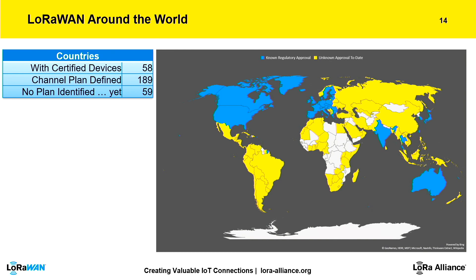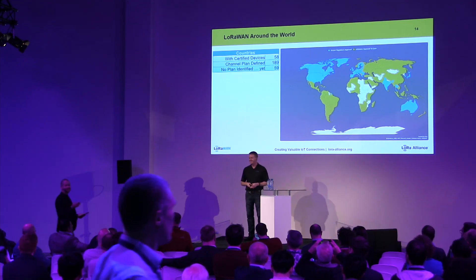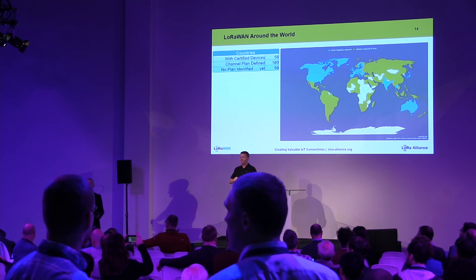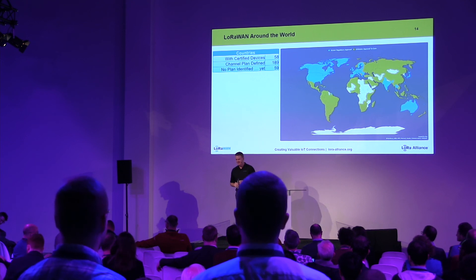The map shown here is different from others you may have seen — it's based on where we have channel plans defined. Everything in yellow or blue has a plan defined; everything in blue has documentary evidence that devices passing the LoRa Alliance certification program have also received regulatory type certification in that country. There are still countries without a defined plan — that's part of what we're working on. This is a call to action: if you are operating in countries shown in yellow or gray, please share your knowledge with the LoRa Alliance or The Things Network / The Things Industry, so we can roll that knowledge into something the entire ecosystem can use. Thank you.